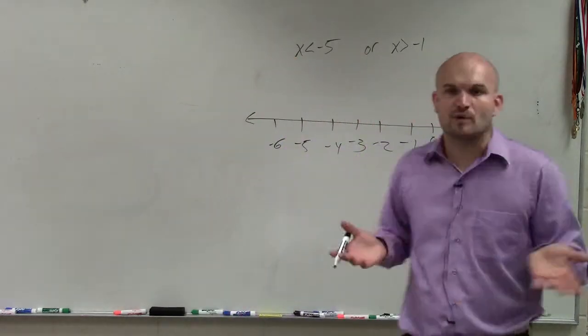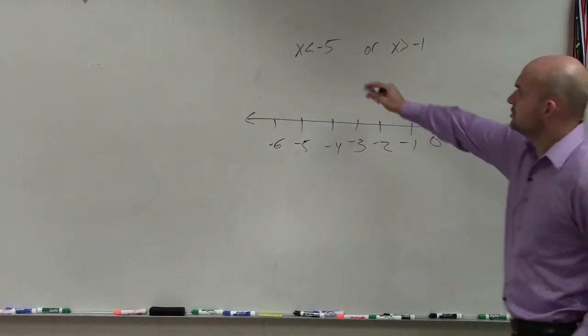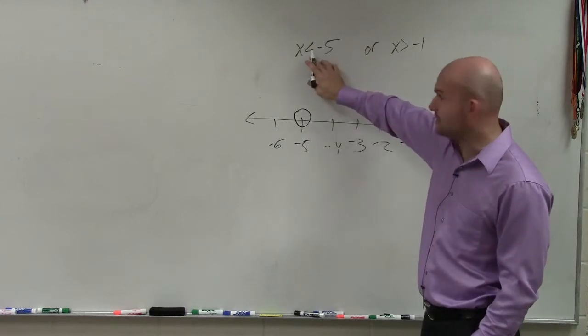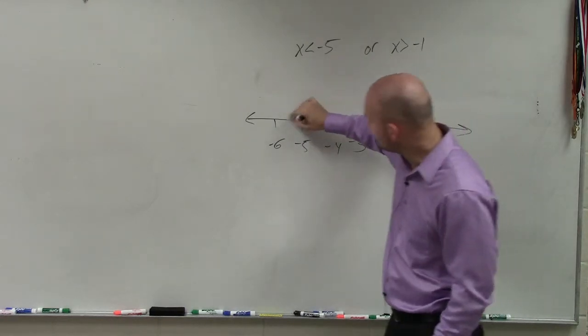Now simply what we're going to do is just graph each one of these separately. So here I have x is less than -5. So I make a nice big circle. Again, I see my arrow point. The values that are less than -5 are going to go to the left.